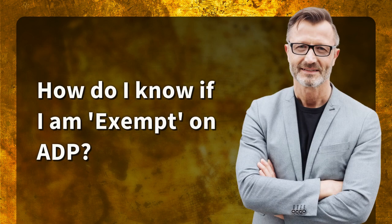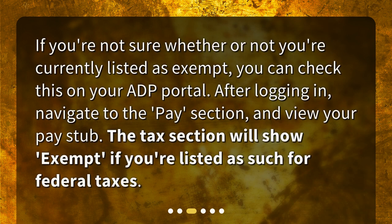How do I know if I am exempt on ADP? If you're not sure whether or not you're currently listed as exempt, you can check this on your ADP portal. After logging in, navigate to the Pay section and view your pay stub. The tax section will show exempt if you're listed as such for federal taxes.